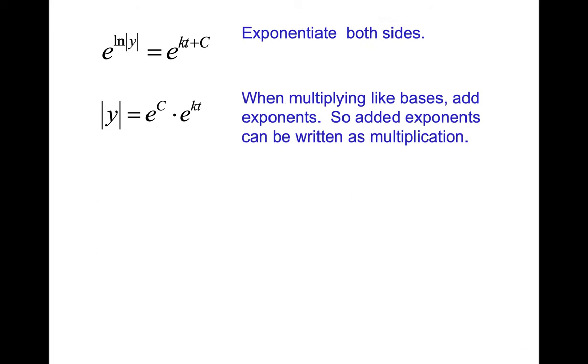So then, what we see next is getting rid of absolute value by saying it could be plus or minus. And then this next step, which will seem a little tricky, is they just renamed the plus or minus e to the c power, that whole thing is a constant. So they just renamed it and used an a instead, just so it doesn't look so complicated. So we have y equals a times e to the kt.